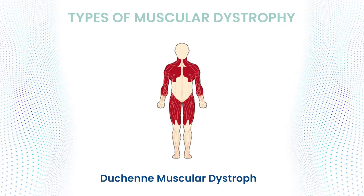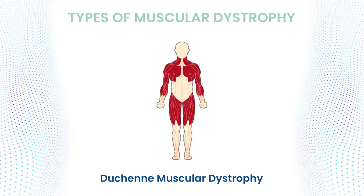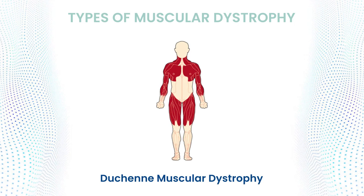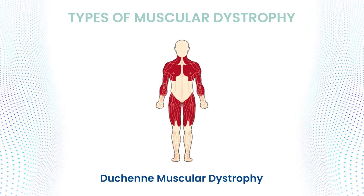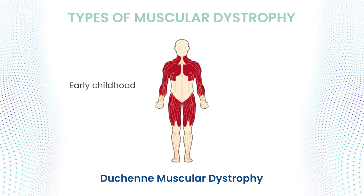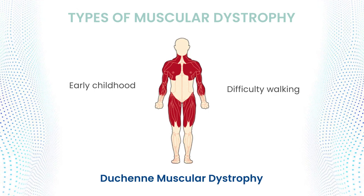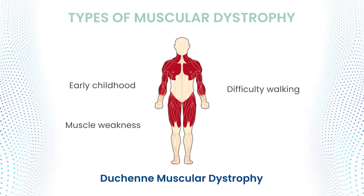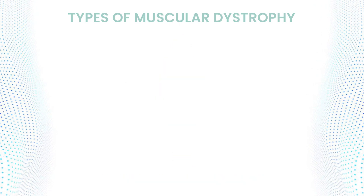Duchenne muscular dystrophy, DMD, is the most common type and primarily affects boys. Symptoms usually manifest in early childhood, including difficulty walking, muscle weakness, and enlarged calf muscles.